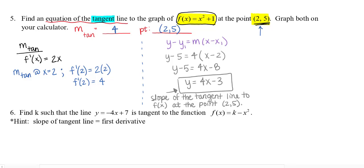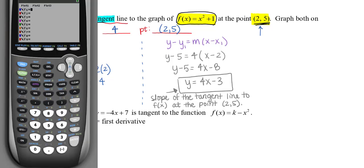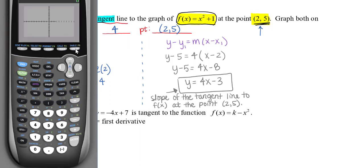Let's see if this makes sense on the graphing calculator. I'll type the original function into y1, then the tangent line into y2, and graph in a normal window. The original blue curve is the parabola shifted up 1, and the tangent line comes in. It does look like it is tangent to the curve around that area.